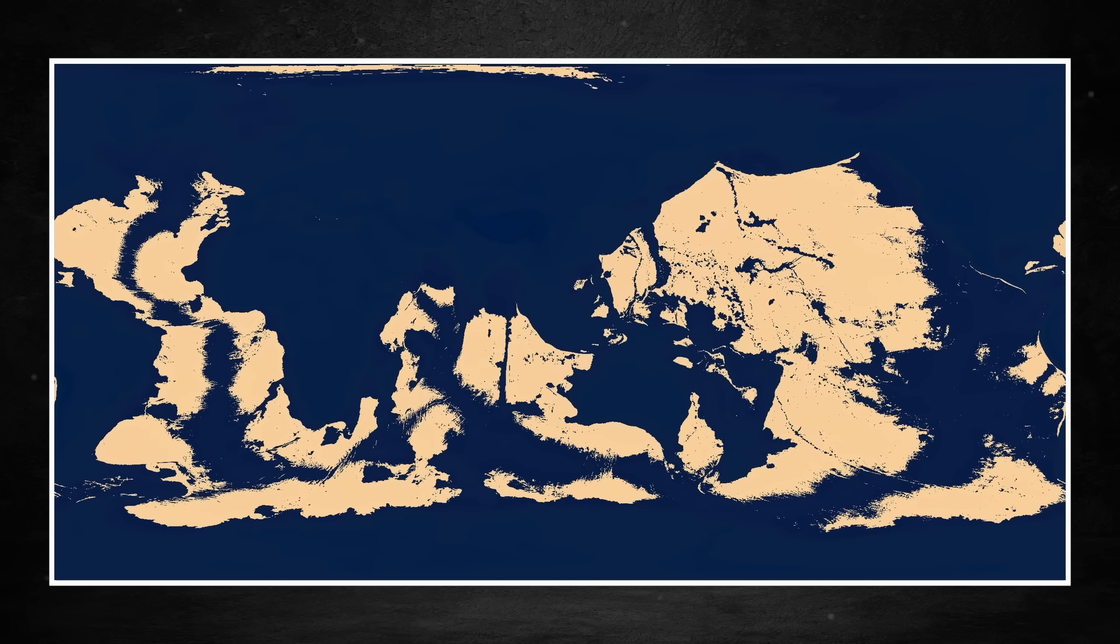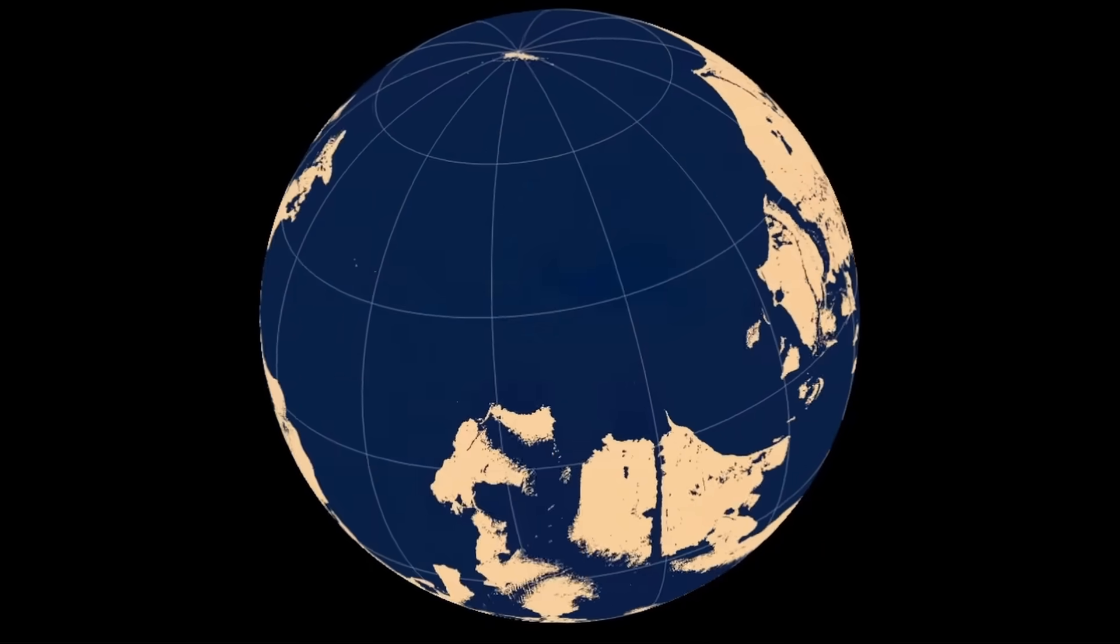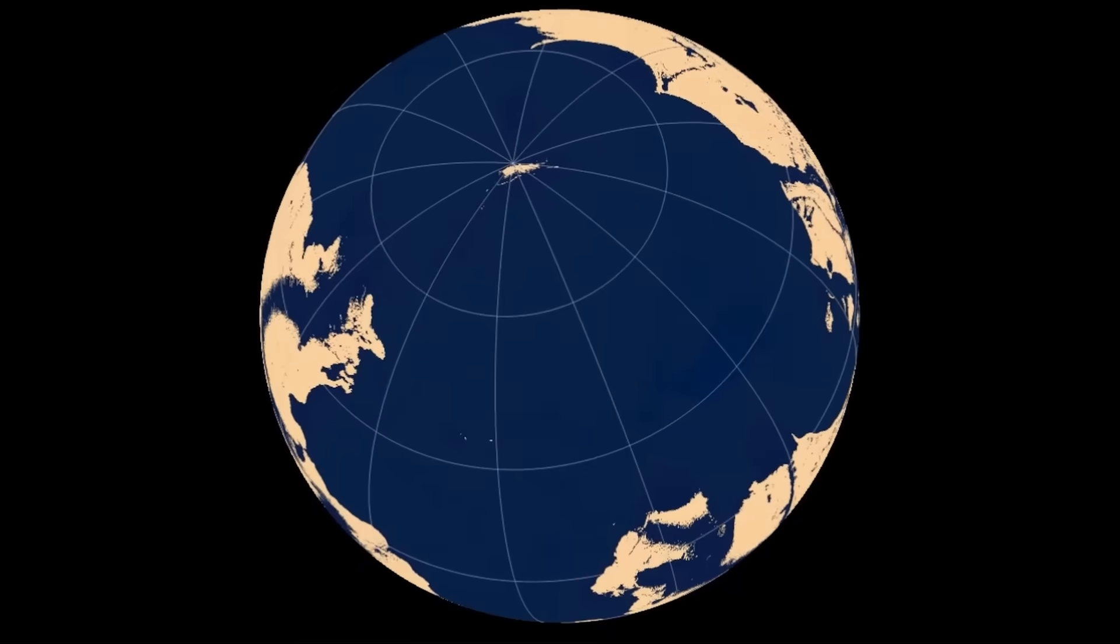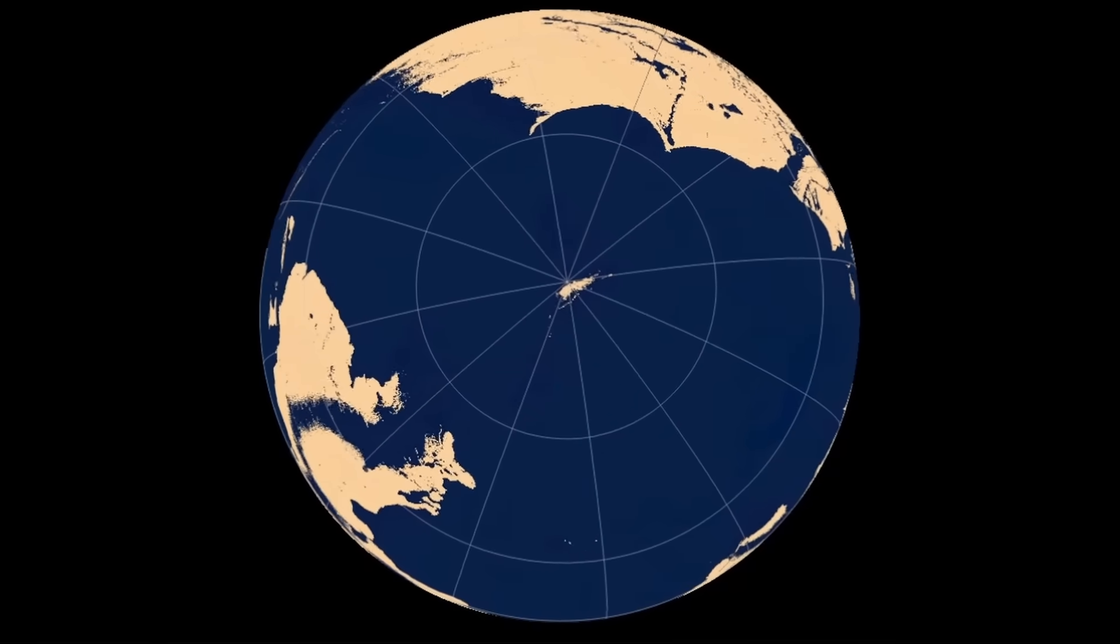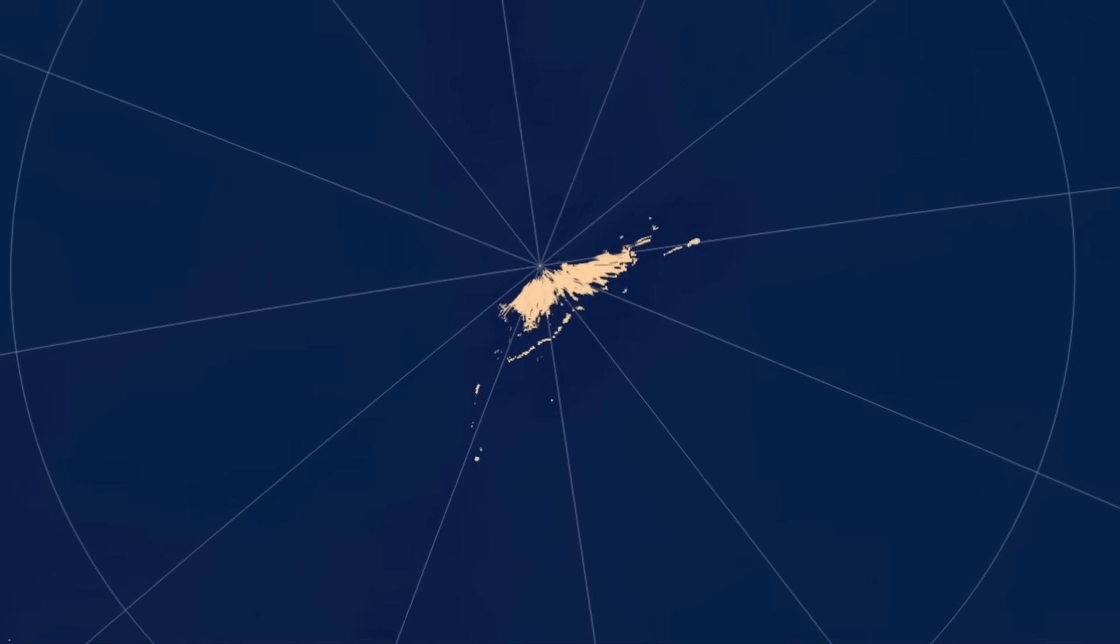But it would be a shame not to see how this inverted Earth looks on an actual sphere, so here it is. Actually, there is a huge ocean here, where Africa and Eurasia currently are, and the continent on the North Pole is actually much smaller when not distorted by the 2D projection.